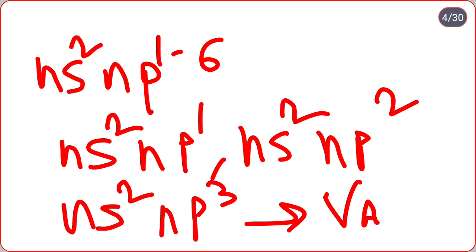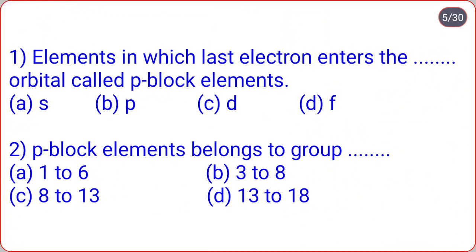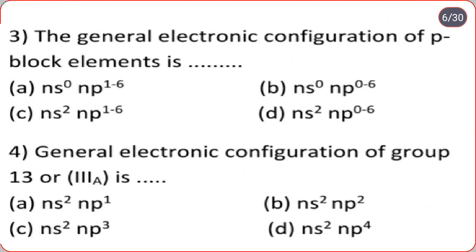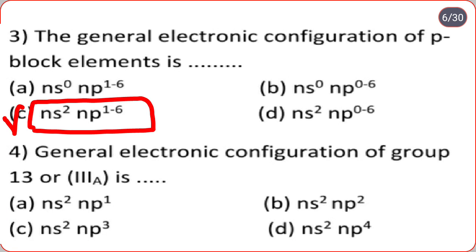First question: elements in which the last electron enters the p orbital are called p-block elements — correct option is B. P-block elements belong to which group? Options: 1 to 6, 3 to 8, 8 to 13, 13 to 18. Correct option is D — p-block elements belong to group 13 to 18. The general electronic configuration of p-block elements is ns²np¹⁻⁶, which is option C.